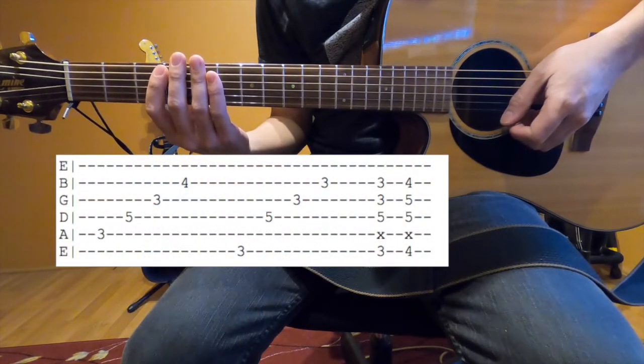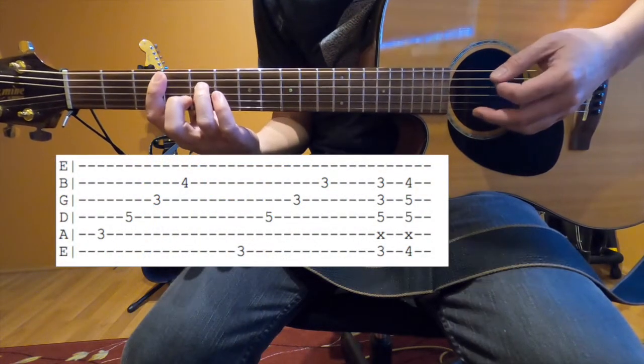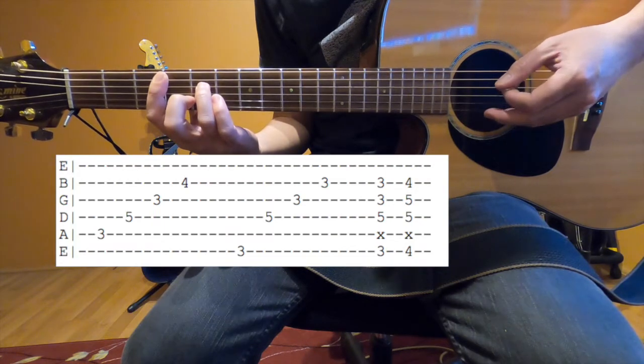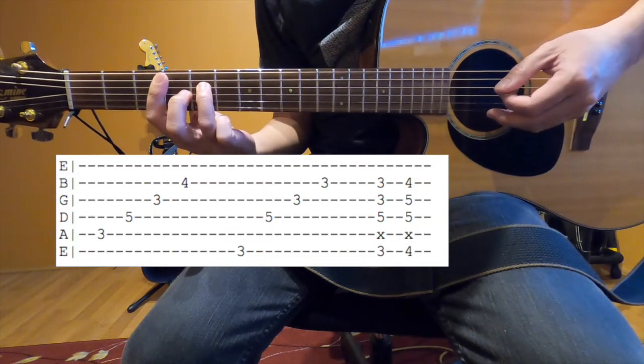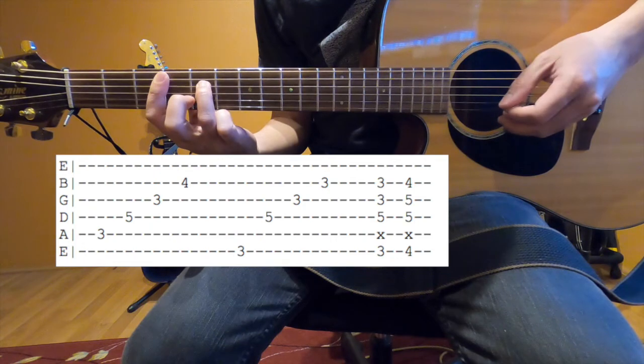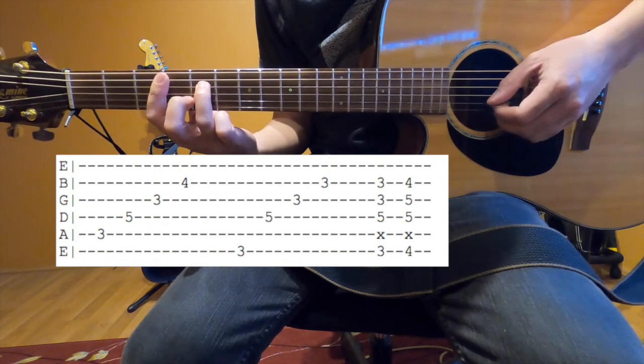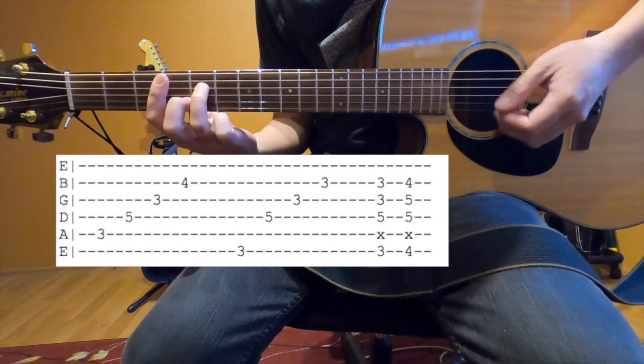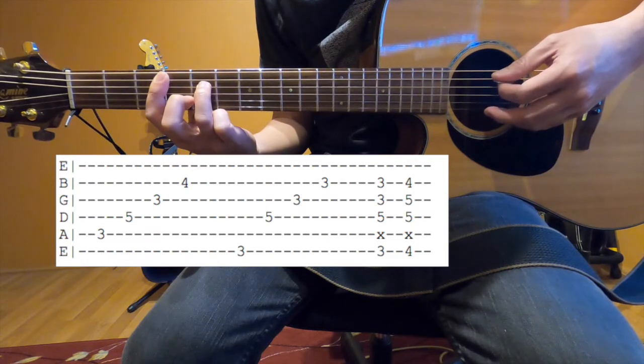The first section starts in a C minor shape, which is 3 on the A string, 5 on the D string, 3 on the G string, and 4 on the B string. And it's just these four notes.